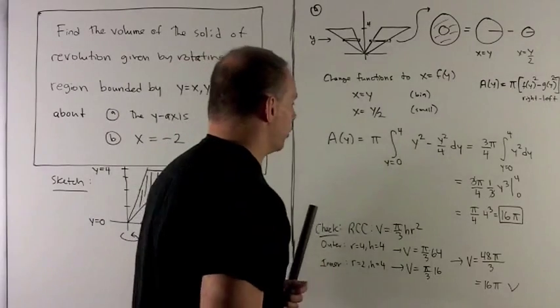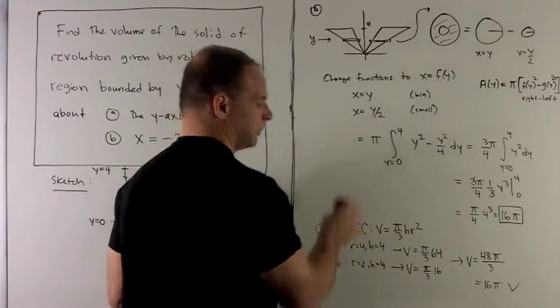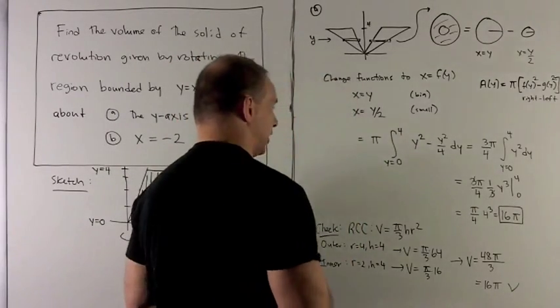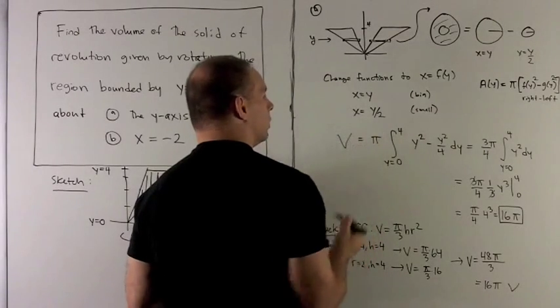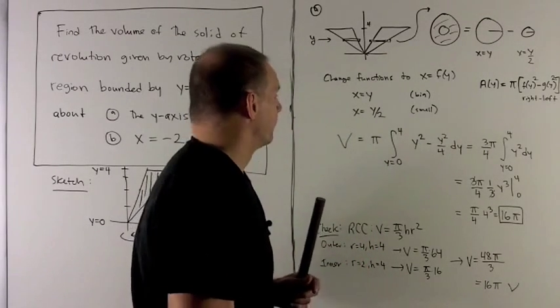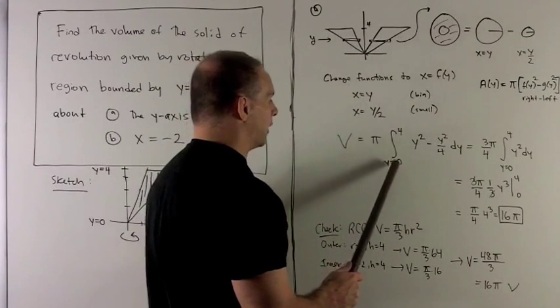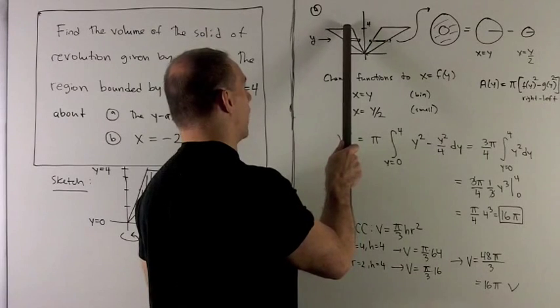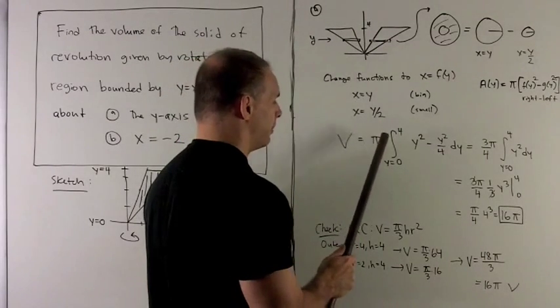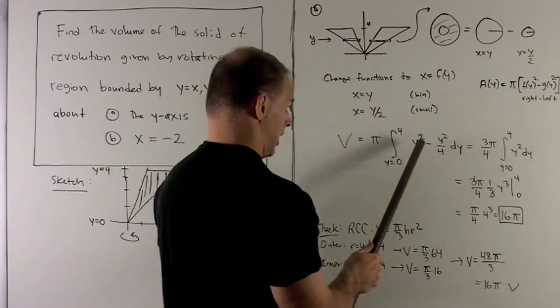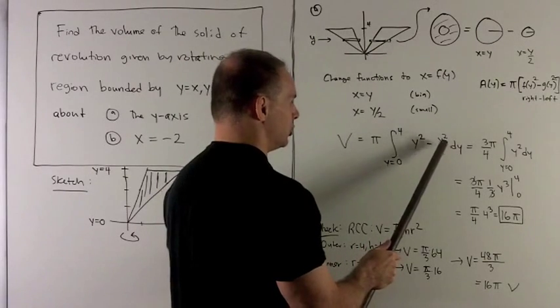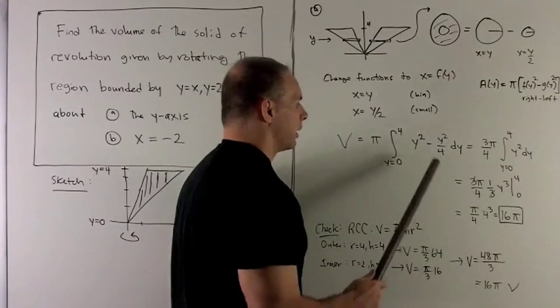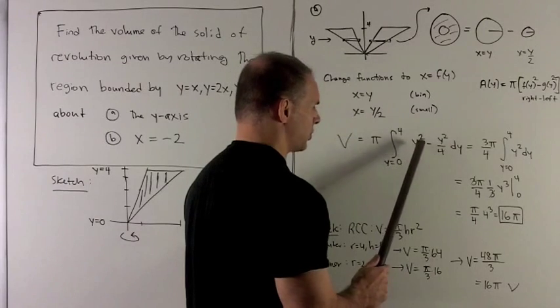To get my volume, we now take the antiderivative of our formula for area. This is going to go from y going from 0 to 4. That's y equal to 0 all the way up to y equal to 4. Then pi f squared minus g squared. This is going to collapse to 3 fourths y squared. So I'm going to bring the 3 fourths out in front.